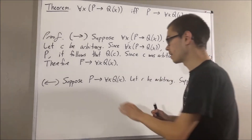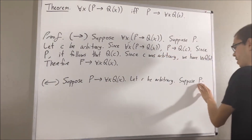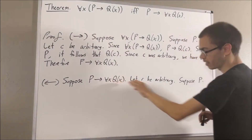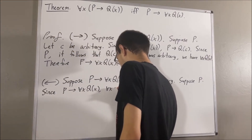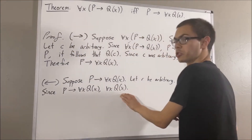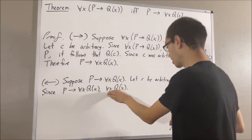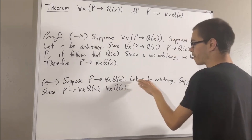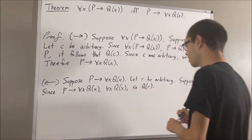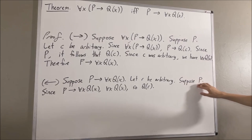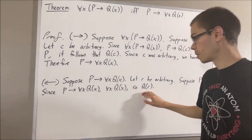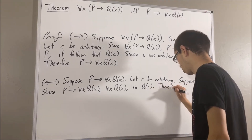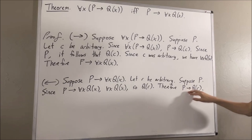Well, since P implies for all x, Q of x, and P is true, these two tell us we have for all x, Q of x. So this statement is true, and it works for all objects, so it must work for our object r. Taking x to be r, we have that Q of r is true. And now we see under the assumption P is true, it follows that Q of r is true. So if P is true, then Q of r is true. So we have shown that P implies Q of r.